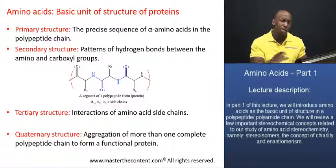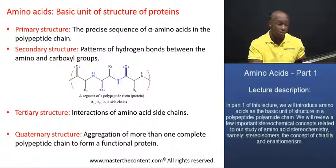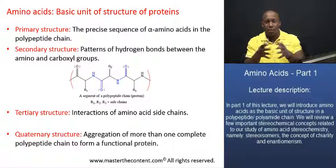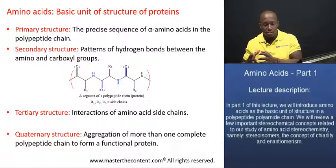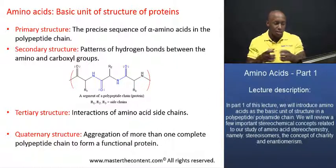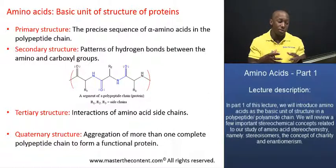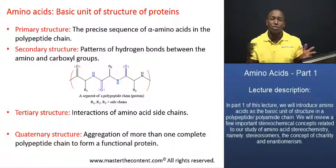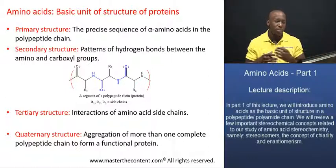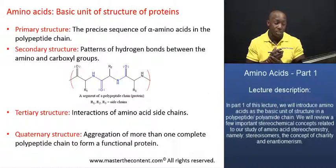Amino acids are the most simple, the most basic units of structure in a protein molecule. What actually happens is that several individual amino acid units — we refer to them as monomers — will come together, joined by means of peptide links, resulting in the formation of a much longer chain, a polyamide or polypeptide, which can then undergo additional conformational structural changes.